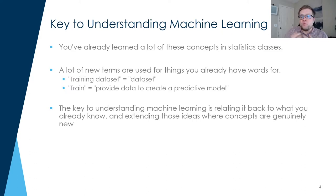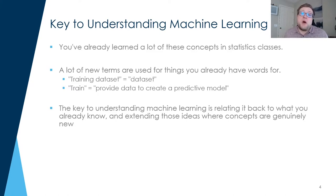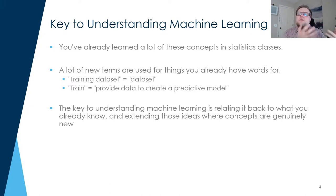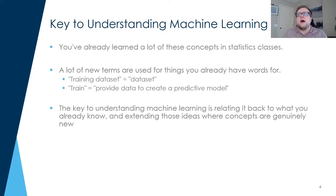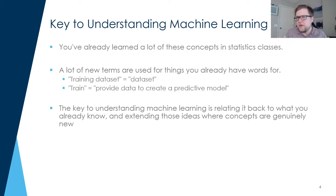The word 'train' itself is simply what we would call running a model — where you take your dataset as input and run regression on it to create your predictive model on the other side. That is training a model. The key to machine learning for a social scientist is really relating it back to concepts you're already familiar with, and then asking: what is the part that's familiar, and where truly is the new piece? What is actually pushing beyond what I was able to do before? There are absolutely new things here — it's just that fundamentally, at its base, it's not all that different.